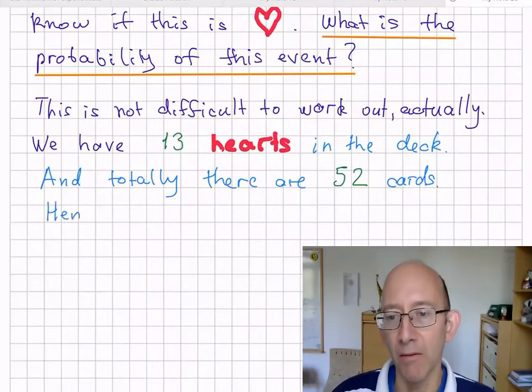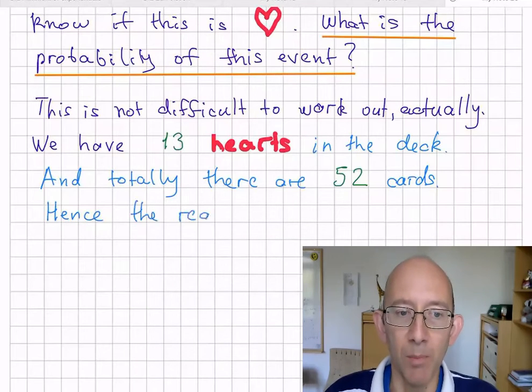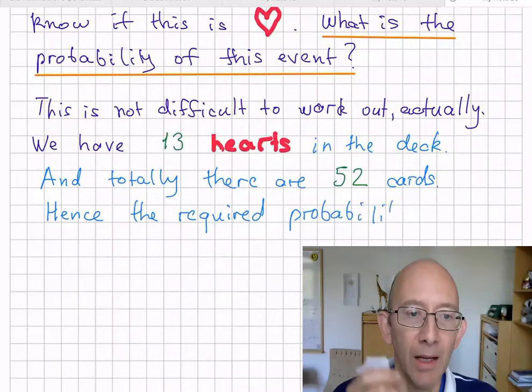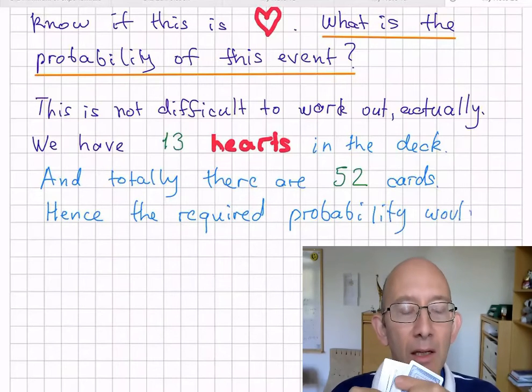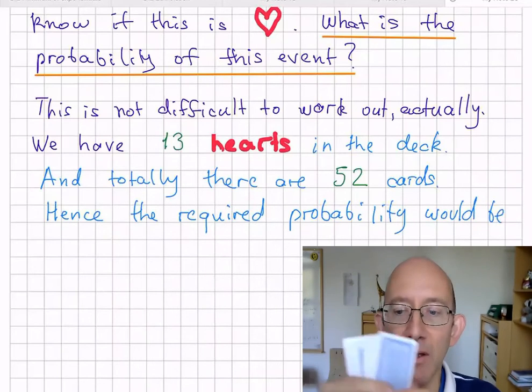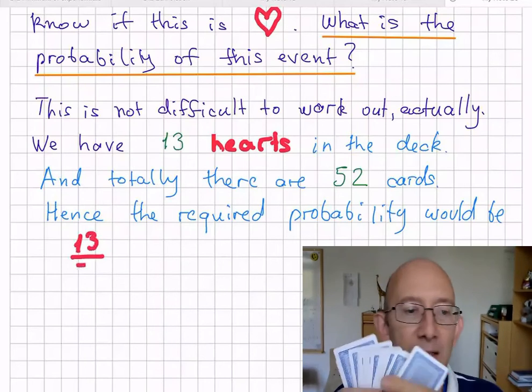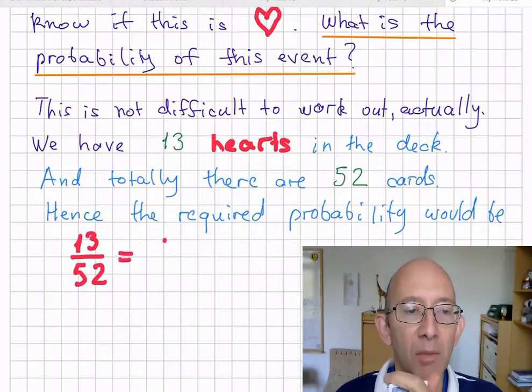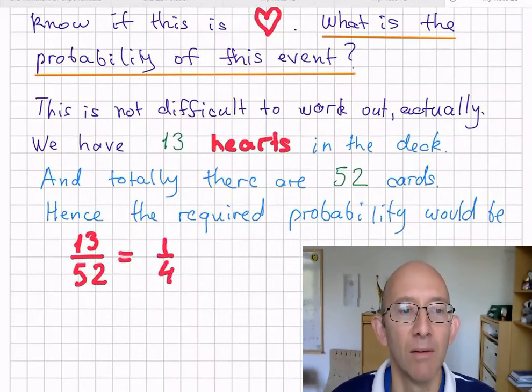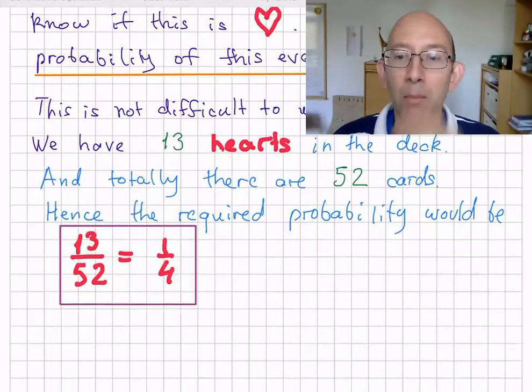As a result, we can quite easily work out the required probability of choosing a heart from this deck. And to do so, we need to divide 13, the number of hearts in this deck, by the total number of cards in this deck. And this probability will be one fourth. Simple.